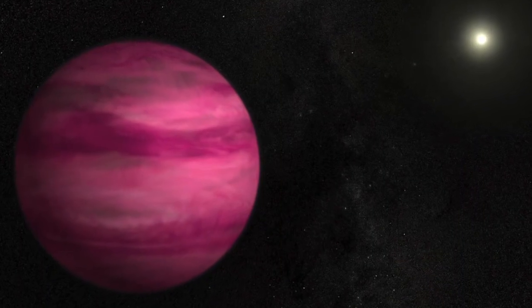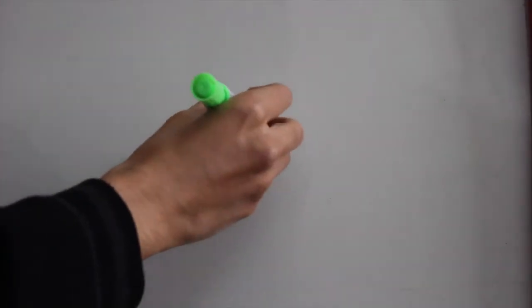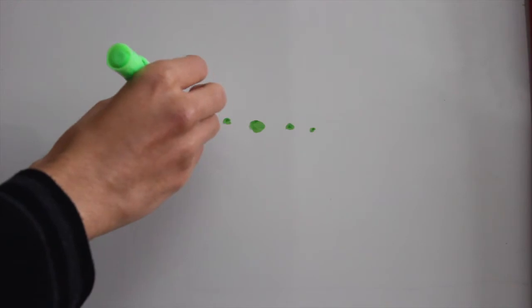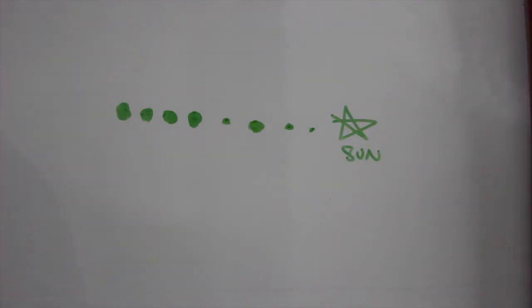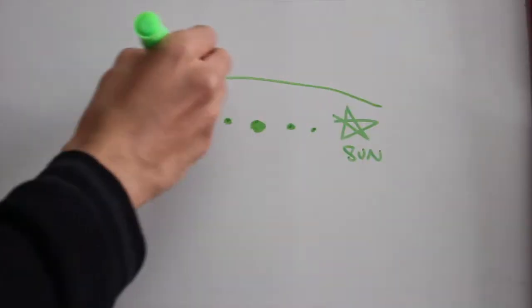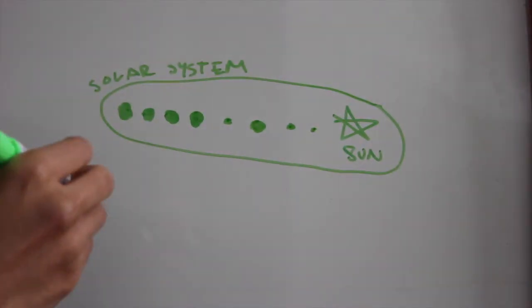An exoplanet quite simply is just a planet that lives outside of our solar system. To get some context on this, let's take a look at this not-to-scale visual. This dot here is us on Earth. The other smaller dots are our neighbors in the solar system: Mercury, Venus, us, Mars, Jupiter, Saturn, Uranus, Neptune, and the Sun in the center.